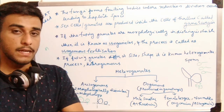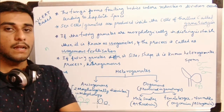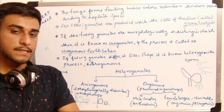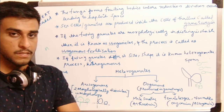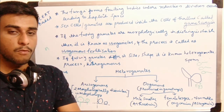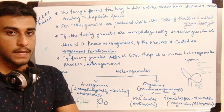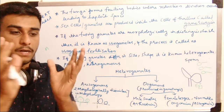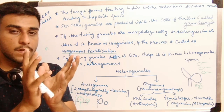These gametes are produced inside a gametangium — a spore-producing structure. Some will be formed by modification of hyphae which release gametes; some will be formed inside a particular structure known as the gametangium.